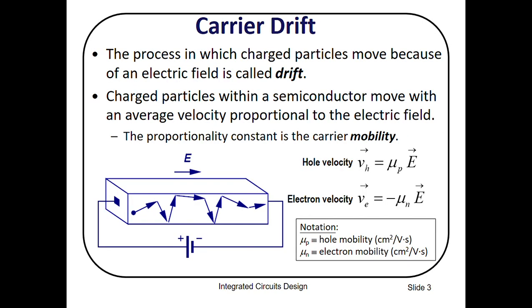Carrier drift: the process in which charged particles move because of an electric field is called drift. Charged particles within a semiconductor move with average velocity proportional to the electric field. Here you can see a semiconductor with some applied voltage and the carrier movement showing a zigzag type of motion. The hole velocity v_h equals mu_p times E, where mu_p is hole mobility. Similarly, the electron velocity equals mu_n times E, where mu_n is electron mobility.